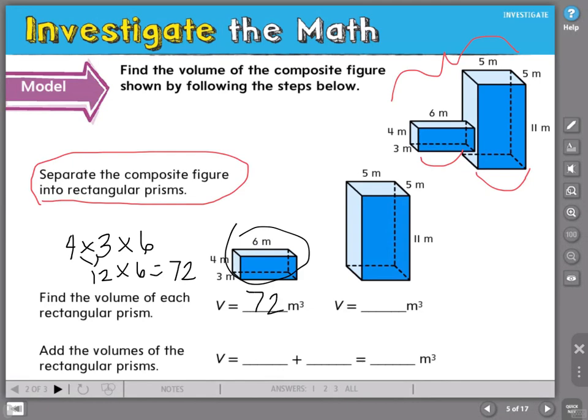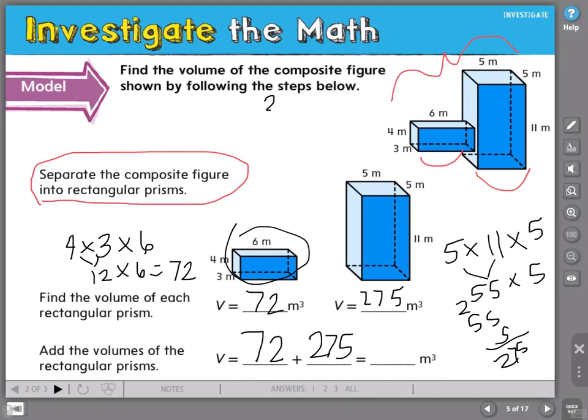Now let's take a look here at the volume of this larger shape. Here, I've got 5 times 11 times 5. So I know 5 times 11 is 55. When I multiply 55 times 5, I get 275 cubic meters. To find the volume of the whole shape of this larger shape, I need to take 72 cubic meters and add it to 275 cubic meters. 275 plus 72 would give me 347 cubic meters. This would be my final answer, the answer of the volume of this composite shape.